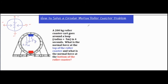When we set up our problem, the sum of all forces — our net force — equals mass times acceleration. We're going to substitute specific parts into the formula that fit our circular motion problem and then start plugging in numbers to solve.